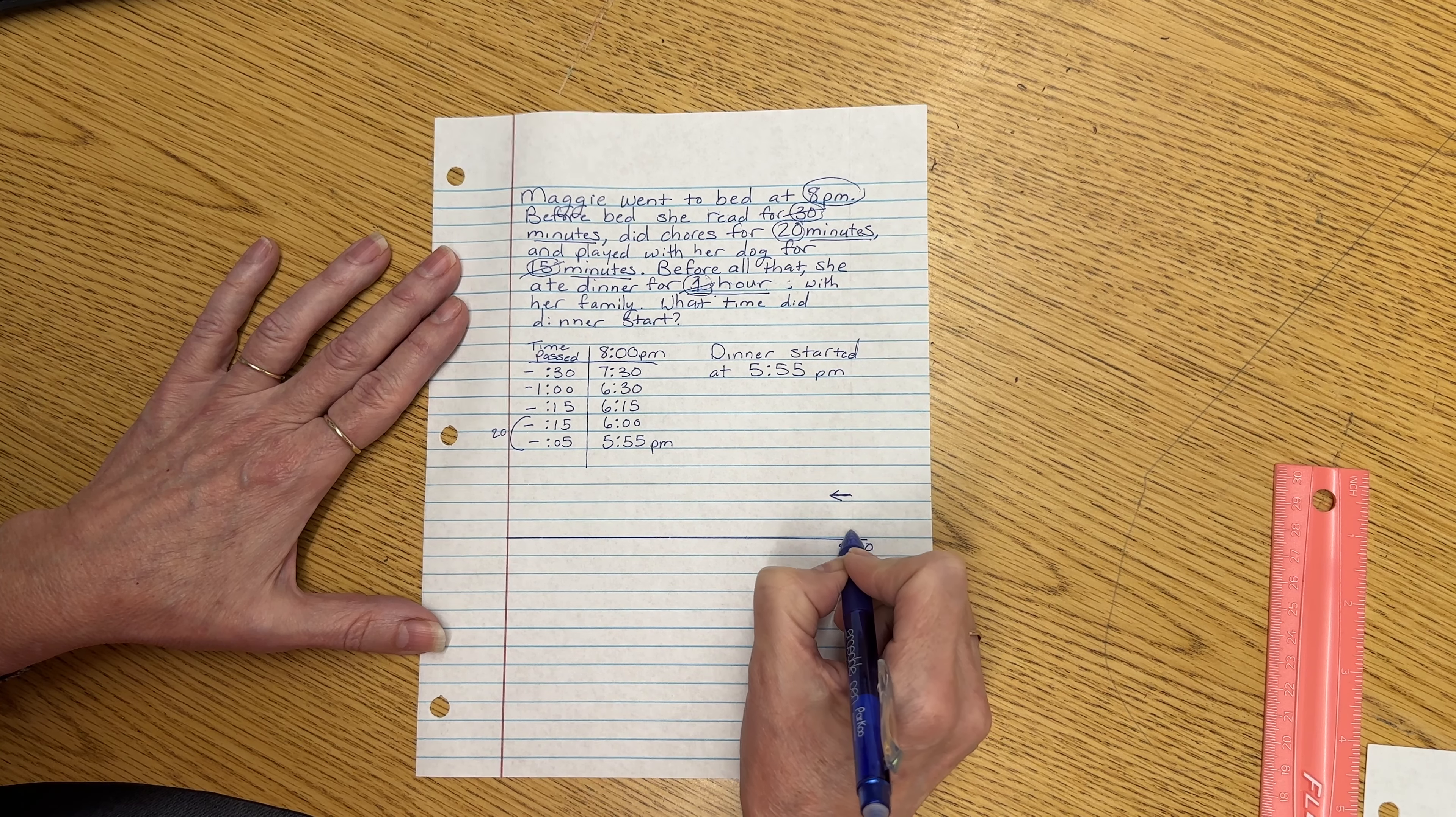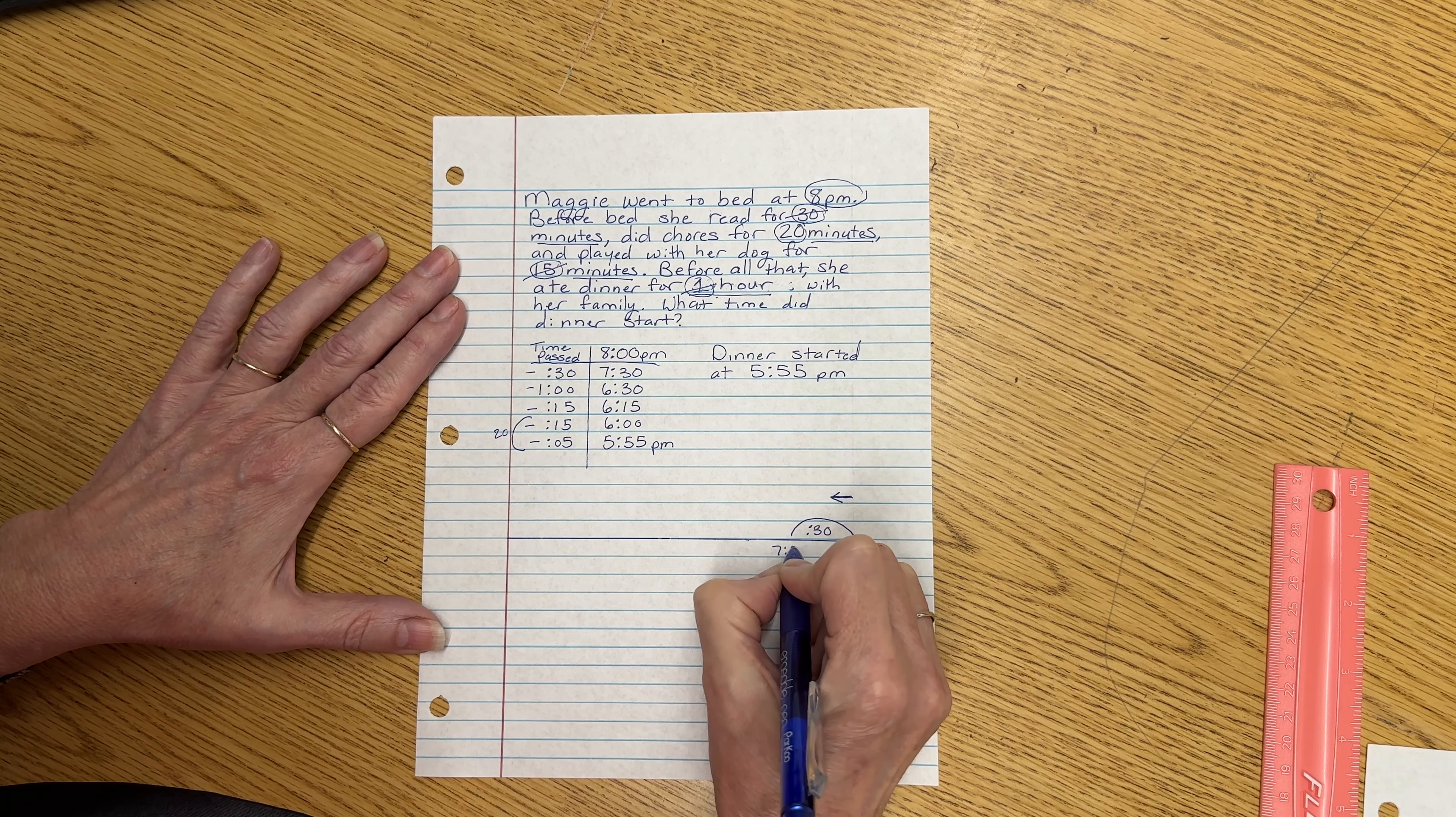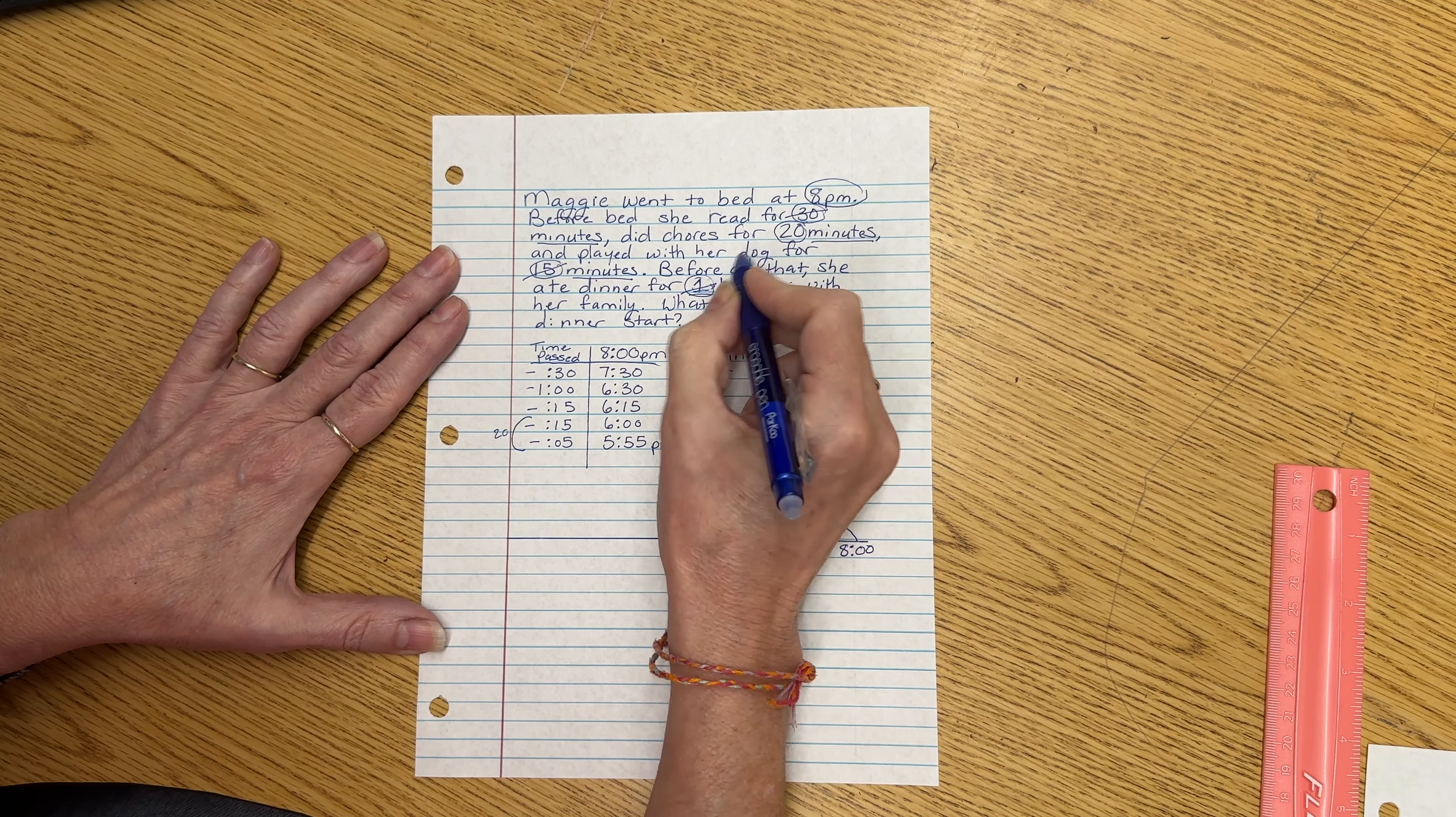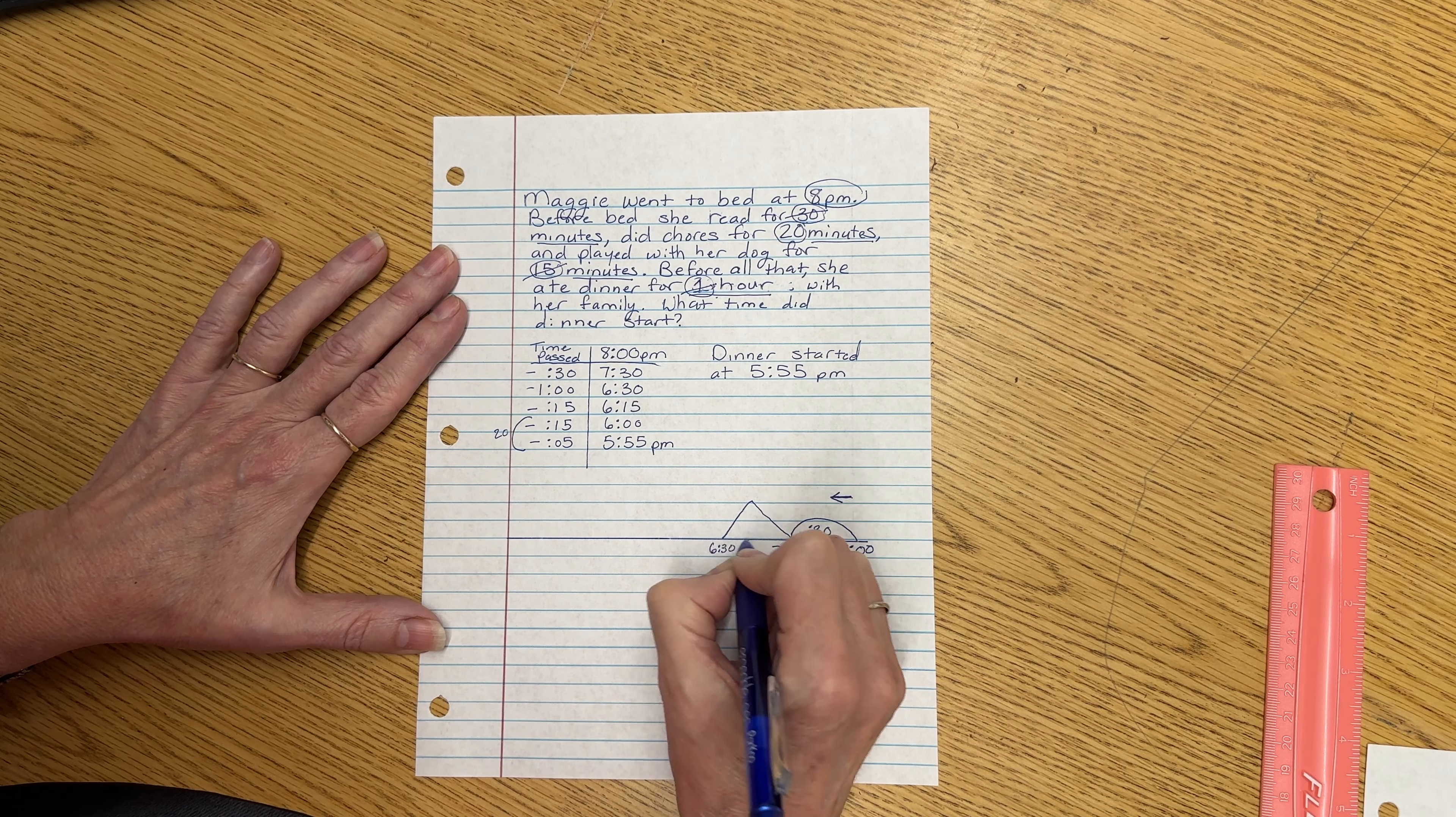So from 8 p.m. Let's do a hill of 30 minutes to get us to 7:30. Then we will do, let's take away that hour. Remember, we use a mountain for an hour. That gets us to 6:30.